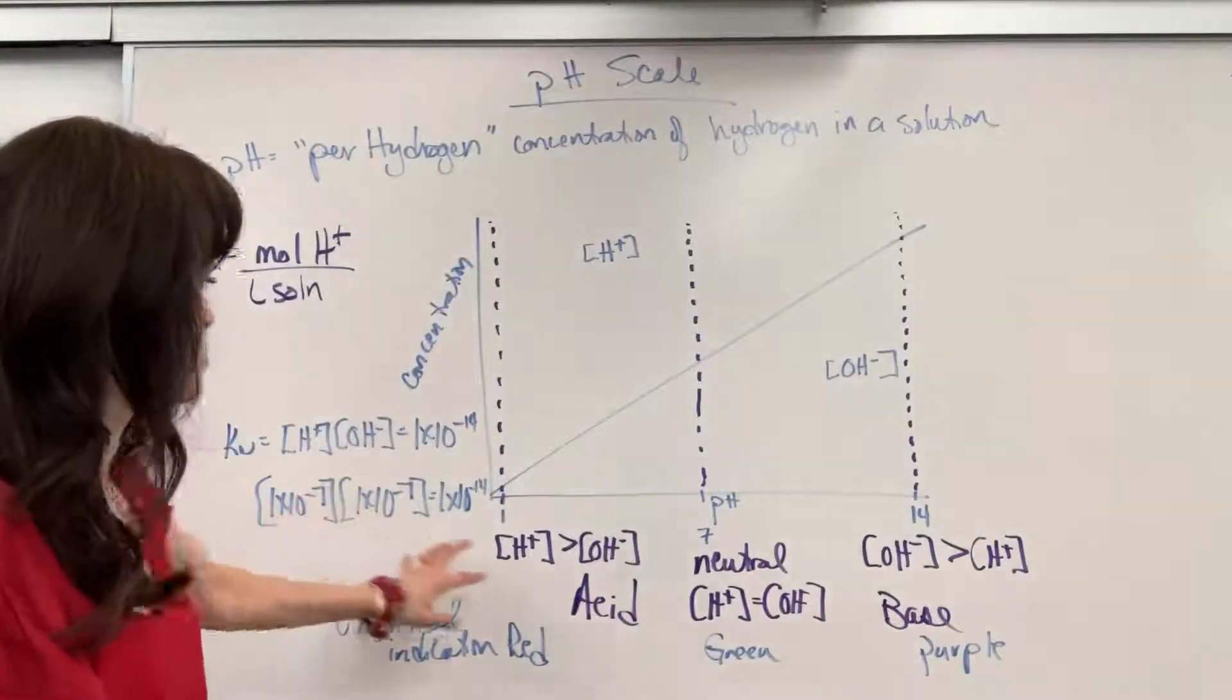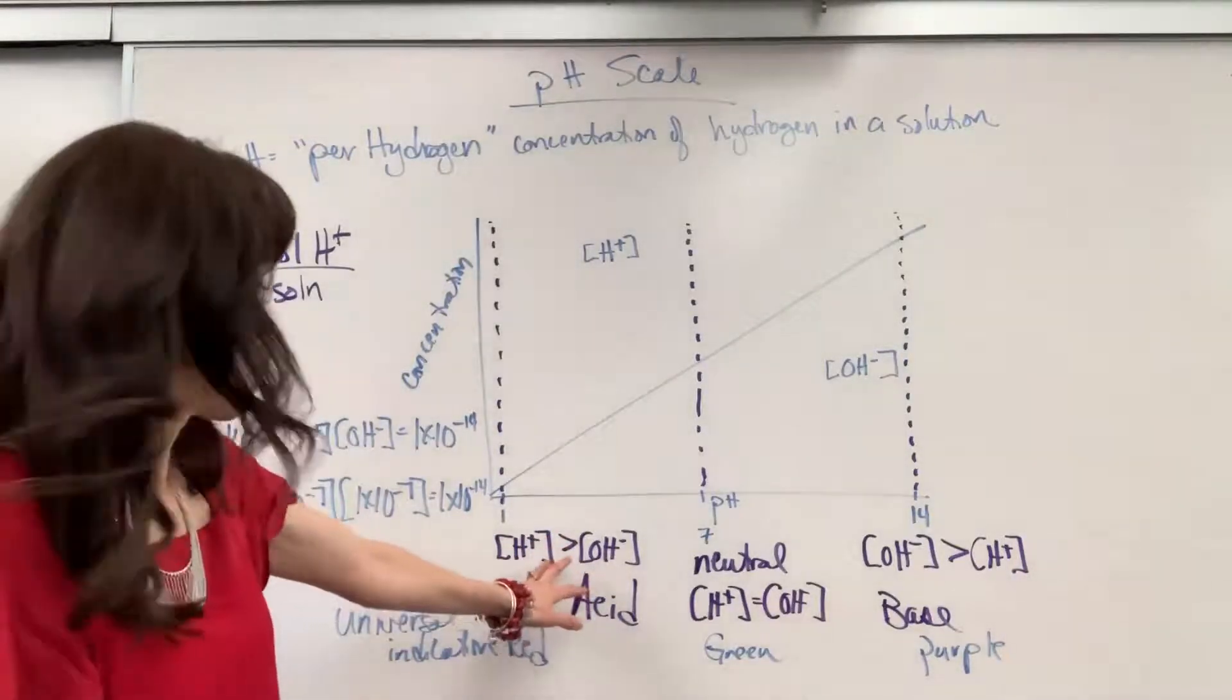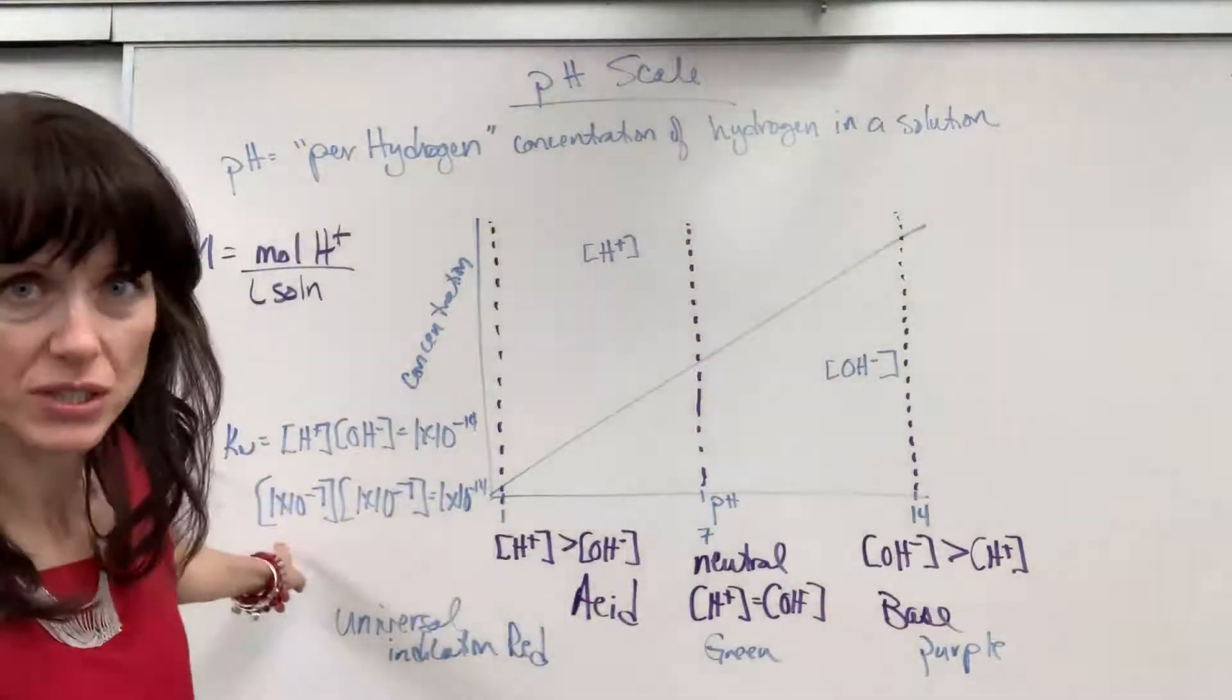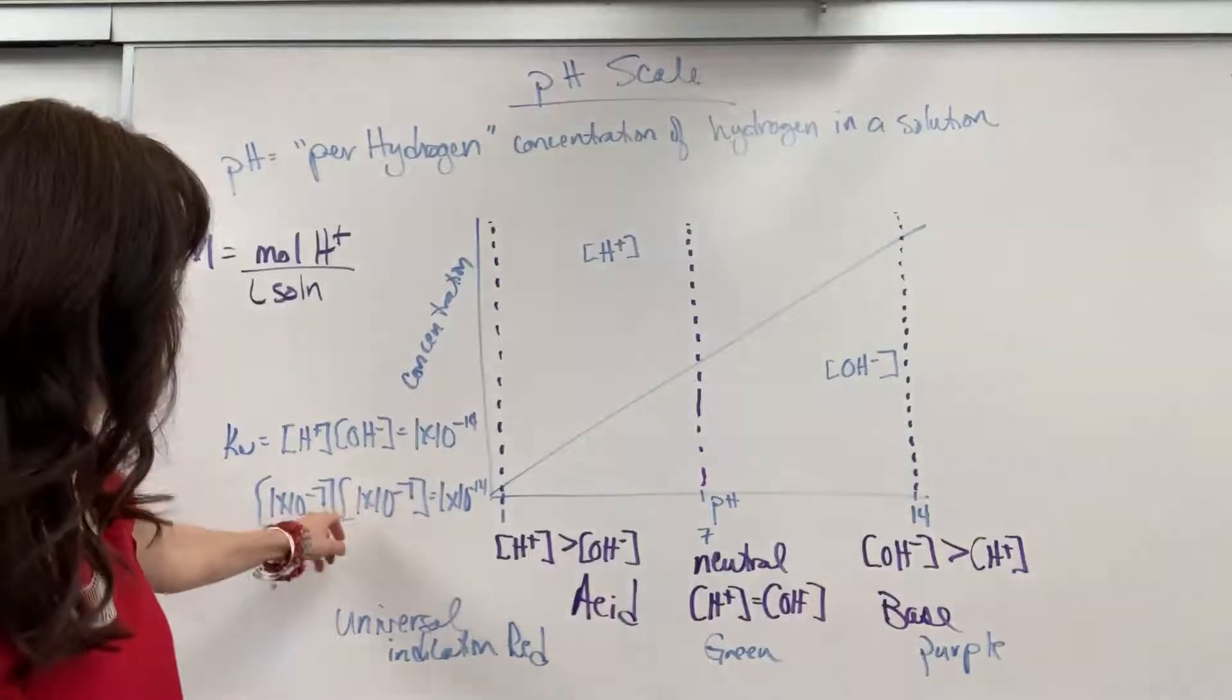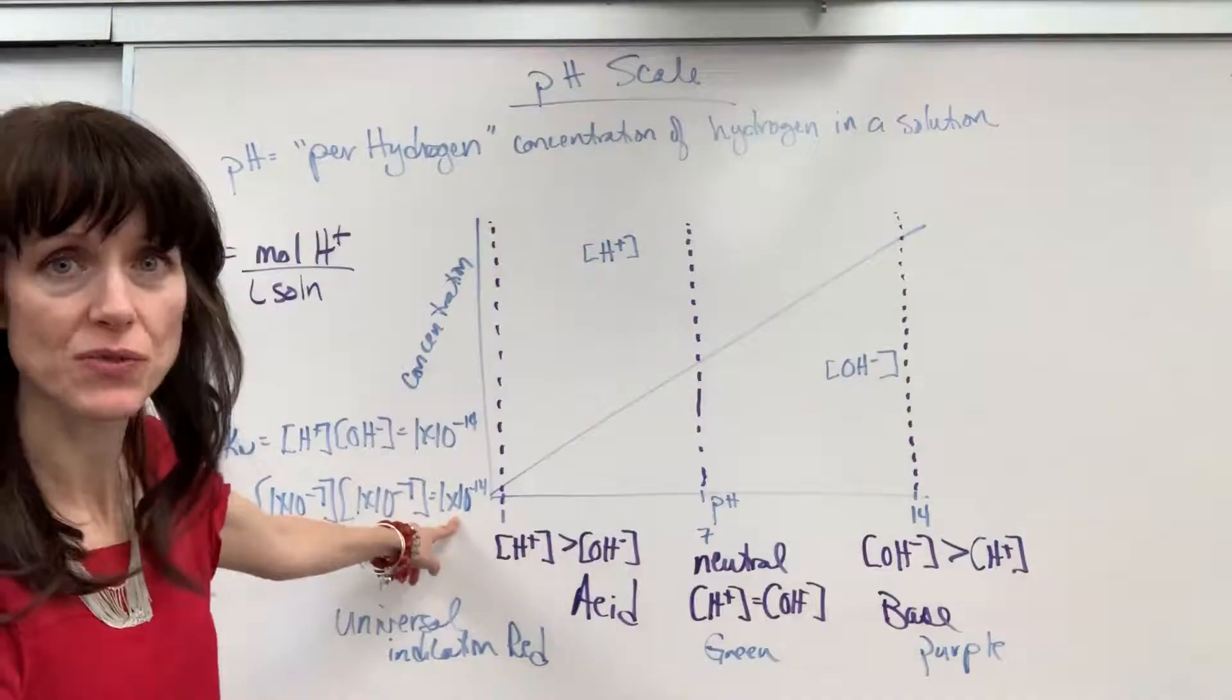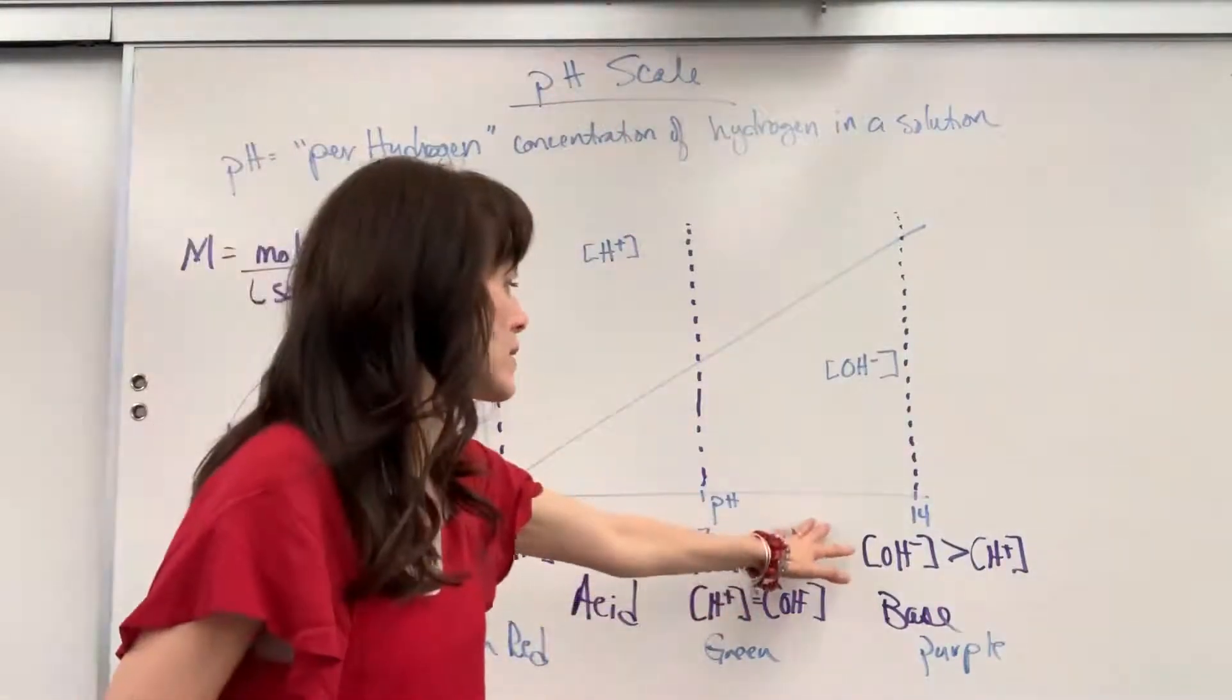And that's going to be true down here as well. When I have the acid, you're going to have a larger concentration of hydrogen. And then that hydroxide, I'll be multiplying those. Smaller hydroxide will always give you that 1 times 10 to the minus 14. Same thing up here.